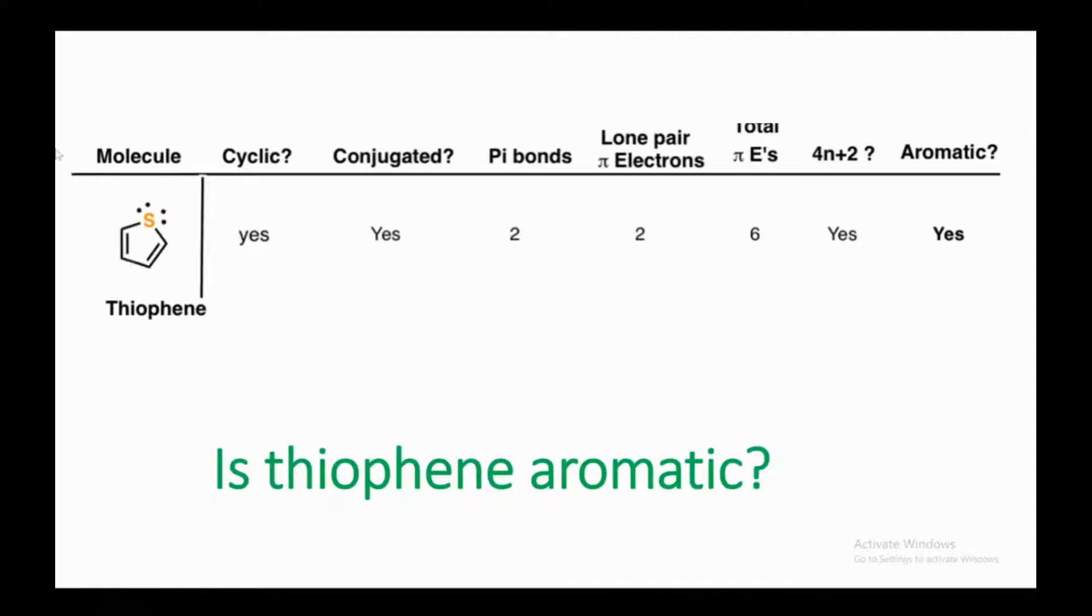So let's start proving why thiophene is aromatic. Question number one: Is this compound cyclic? Yes, it's cyclic because it's in a ring form. Next question: